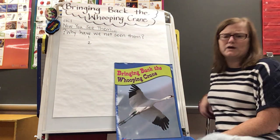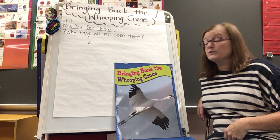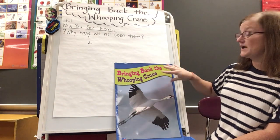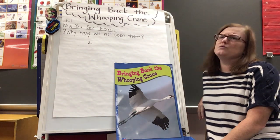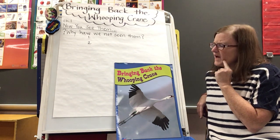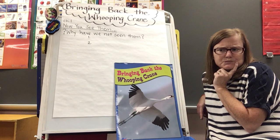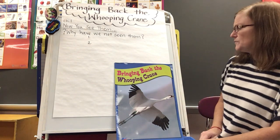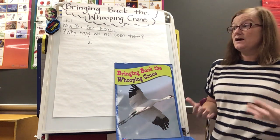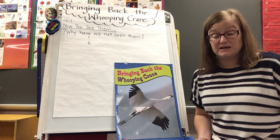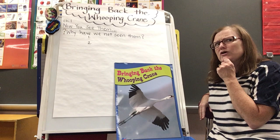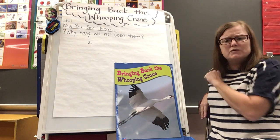As we're reading the story, we're going to be asking ourselves some questions to be able to understand what we're reading. I look at the story, I look at the picture, and I look at the title — it's called 'Bringing Back the Whooping Crane.' I wonder: what are they bringing back? Where were they? We notice the word 'endangered species' was in there — does that mean they're endangered, is there not very many of them left? We need to ask what it means when they say 'bring back the whooping crane.' Let's read to find out.